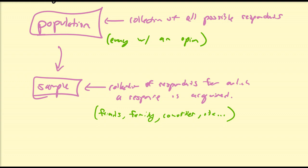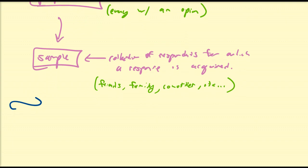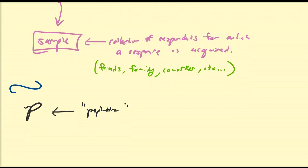Let's introduce some mathematical notation that we're going to be using throughout this series. We're going to refer to P as the population, the set of all possible people that can respond. And S is also going to be representing the sample.